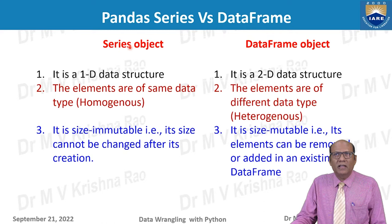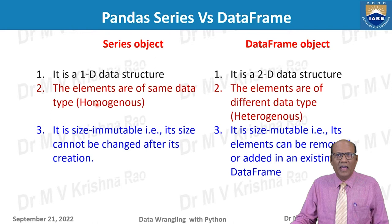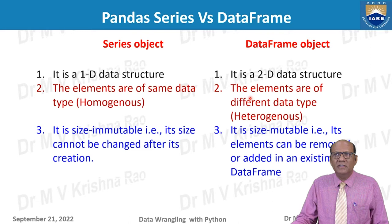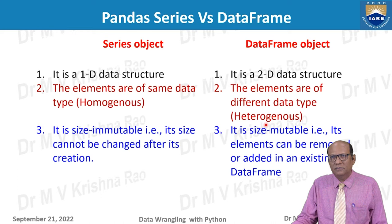Comparing pandas Series and DataFrame: Series is a one-dimensional data structure of the same data type — that is why it is called a homogeneous array. DataFrame is a two-dimensional data structure and is a heterogeneous array, because different columns can have different data types, though within a column the data type is the same. Series is size immutable — once you create it and fix the size, you cannot change it.